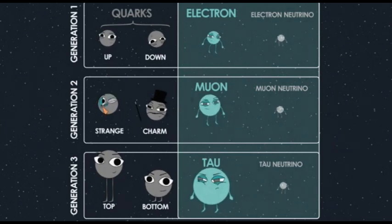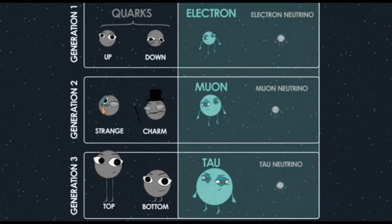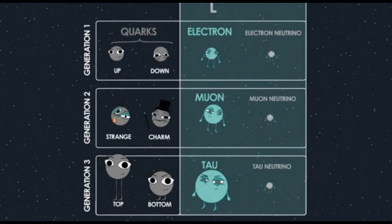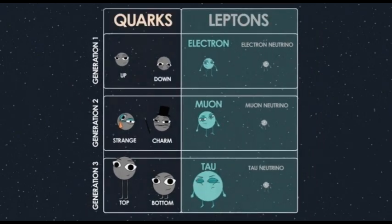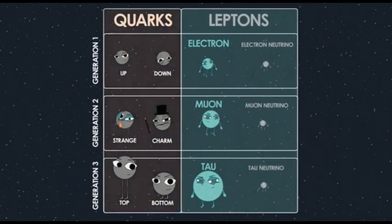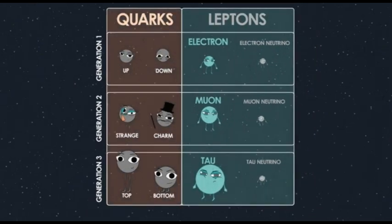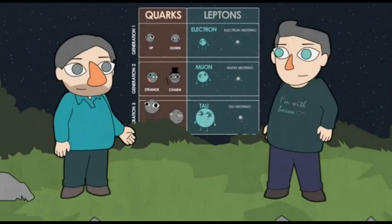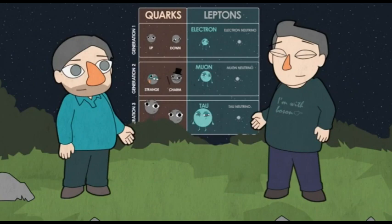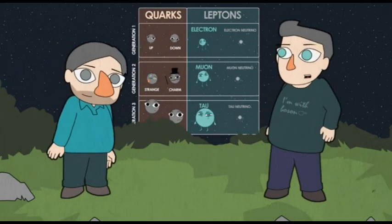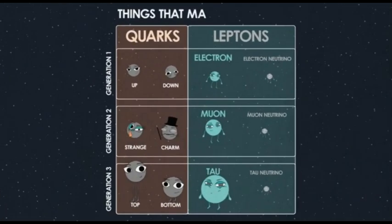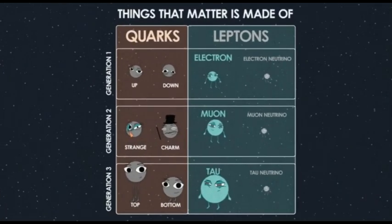The other things — the electrons, muons, taus, and their associated neutrinos — are called leptons. So we have six quarks and six leptons. Are we done? No, because those are only the things that matter is made of. We still have to talk about the things that mediate the forces between matter.